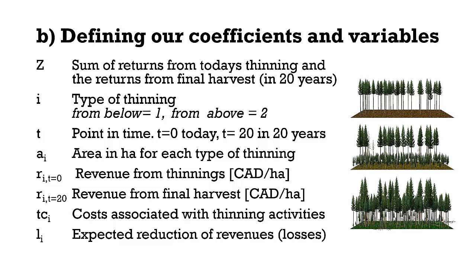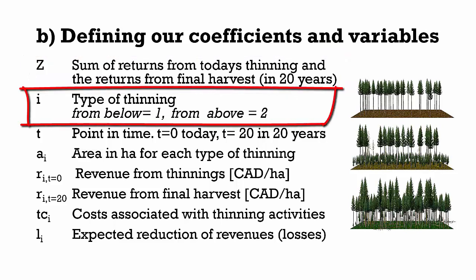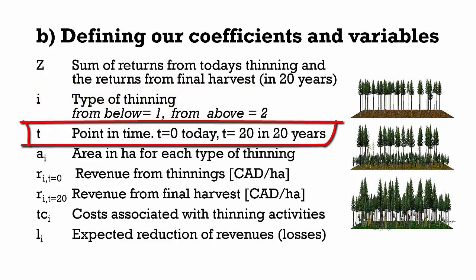We know that the forest owner's goal is to maximize her economic value of the forest or her returns in year 20. So first of all, we assign the letter Z to the sum of returns from today's thinning and the returns from final harvest in 20 years from now. We assign the letter i to the type of thinning, where i equals 1 indicates thinning from below and i equals 2 indicates thinning from above. We are dealing with two points in time: t equals 0 and t equals 20. So we assign t to time, and t can have two values, 0 or 20.